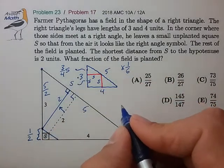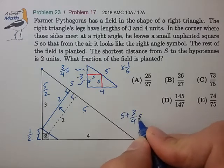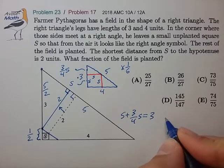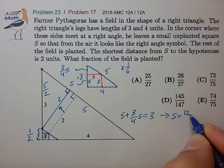So that gives us the equation S plus 3/4 S equals 3, from which we can solve for S equals 12 over 7.